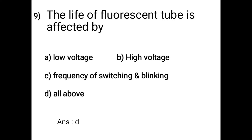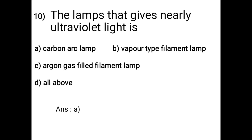Question 9: The life of a fluorescent tube is affected by: A - low voltage, B - high voltage, C - frequency of switching and blinking, D - all of the above. The answer is option D: the life of a fluorescent tube is affected by low voltage, high voltage, and frequency of switching and blinking.